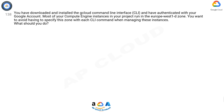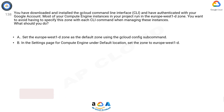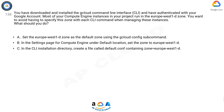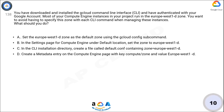Question 138. You have downloaded and installed the Cloud Command Line Interface (CLI) and have authenticated with your Google account. Most of your Compute Engine instances in your project run in the europe-west1-d zone. You want to avoid having to specify this zone with each CLI command when managing these instances. What should you do? A: Set the europe-west1-d zone as the default zone using the cloud config sub-command. B: In the settings page for Compute Engine, under default location, set the zone to europe-west1-d. C: In the CLI installation directory, create a file called default.conf containing zone=europe-west1-d. D: Create a metadata entry on the Compute Engine page with key compute/zone and value europe-west1-d. Now take 10 seconds to think about the answer.